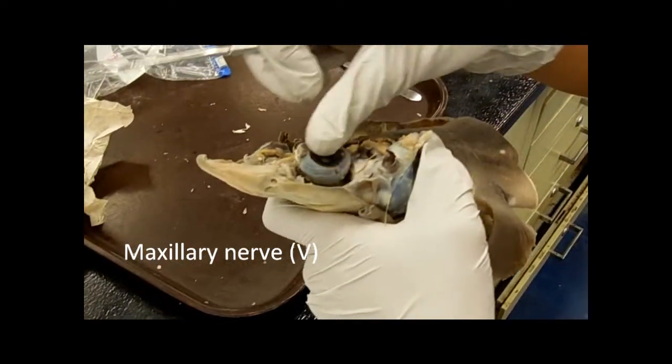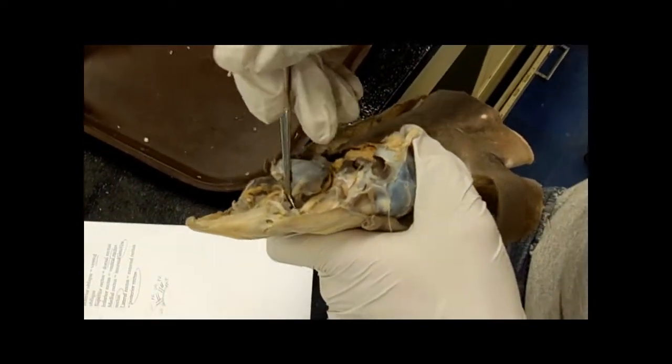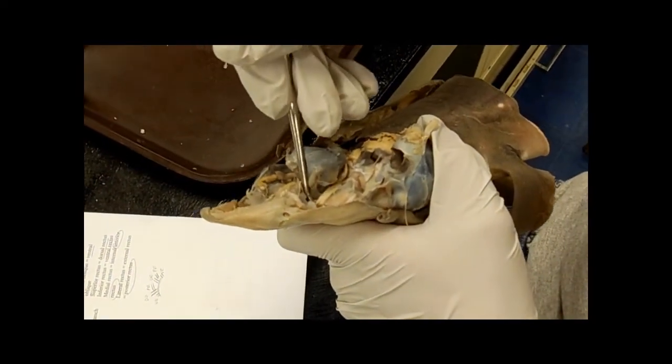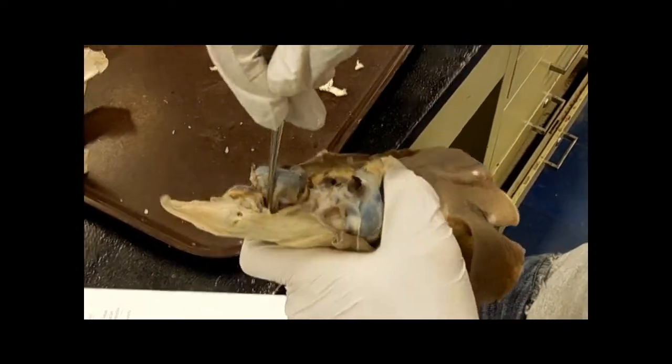The one that goes straight across, this is the maxillary, maxillary nerve. Like how the one back here is the mandibular nerve, the one here is the maxillary nerve.